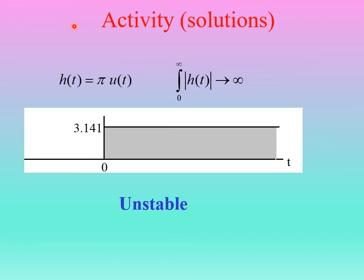Now the continuous-time examples. Example four: h(t) = π · u(t). The impulse response is zero until t=0, then jumps up to π (approximately 3.141) and stays constant. The stability condition requires this to be absolutely integrable — the area under the curve must be less than infinity. Since the function keeps going to the right at a constant value π, it has infinite area. So this is an unstable system. A stable system must decay to zero at some point in time.